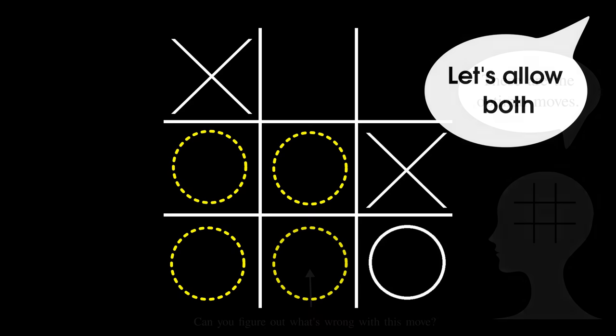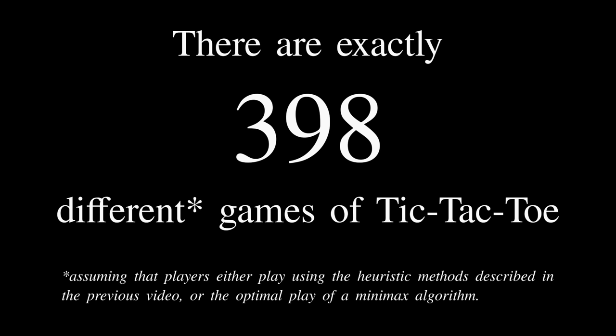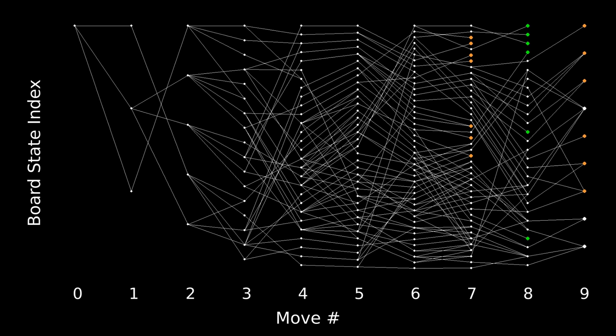Well, simple. We just allow both styles of play. And if we do that, we end up with 398 different games of tic-tac-toe, which we can represent in this beautiful decision tree.